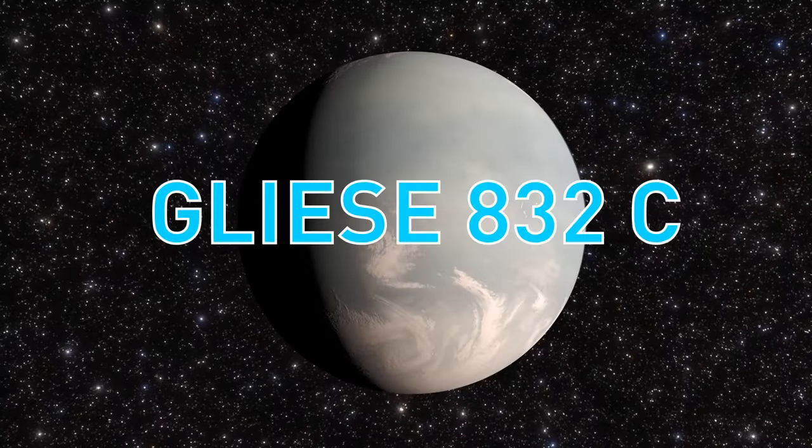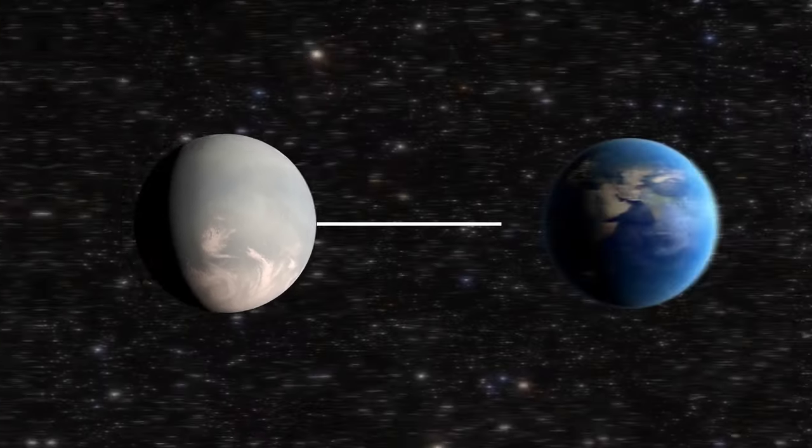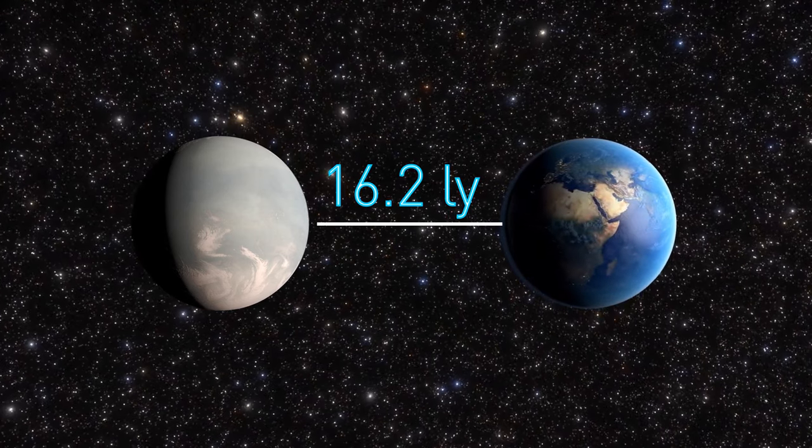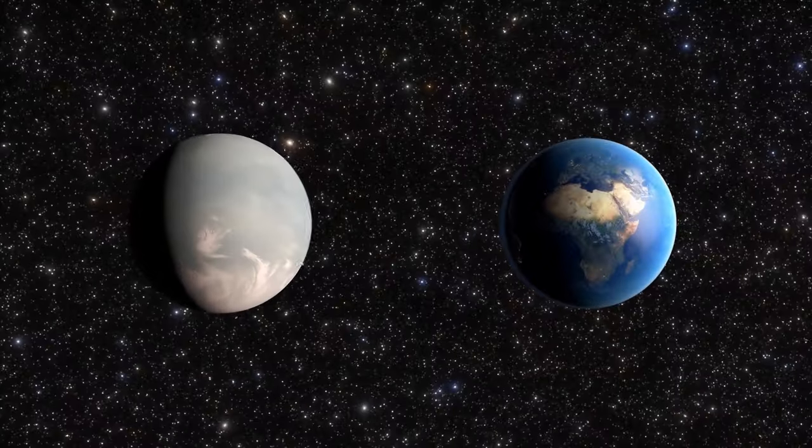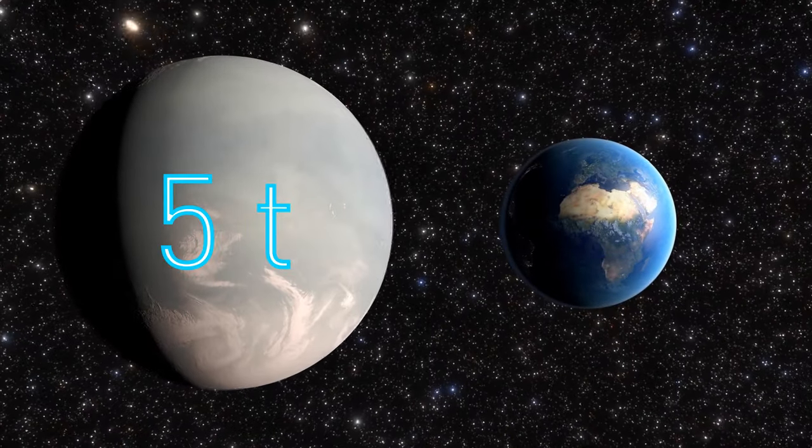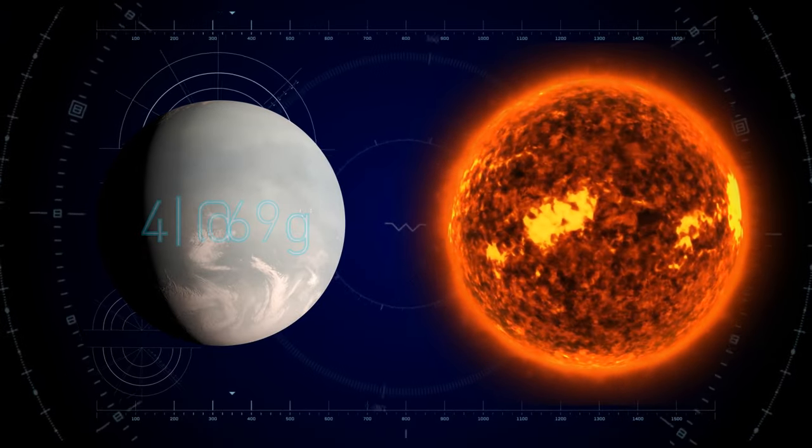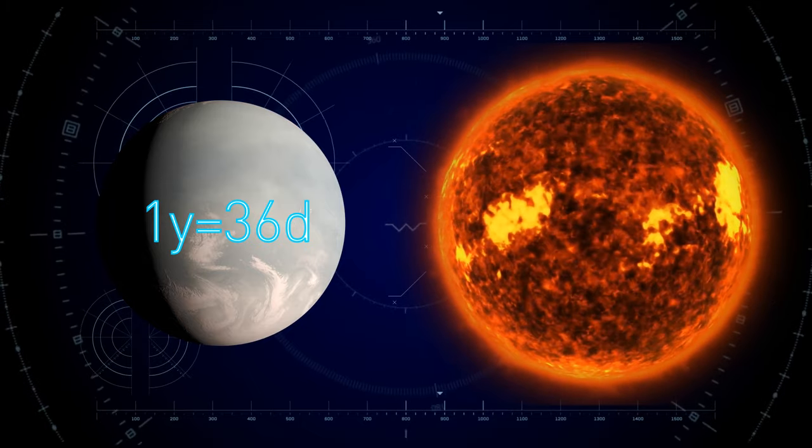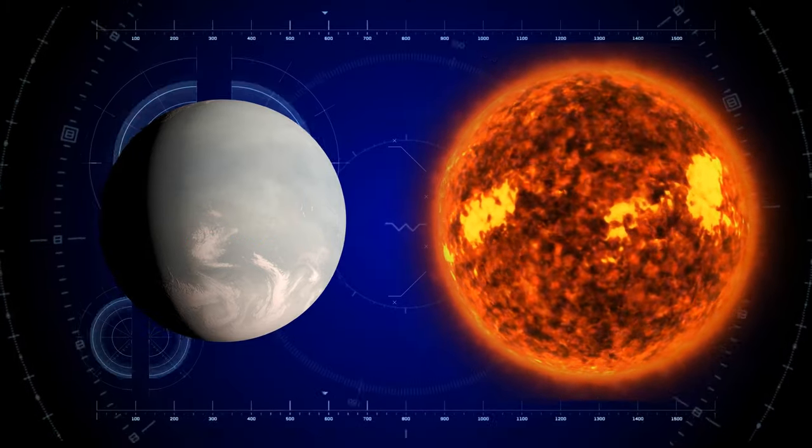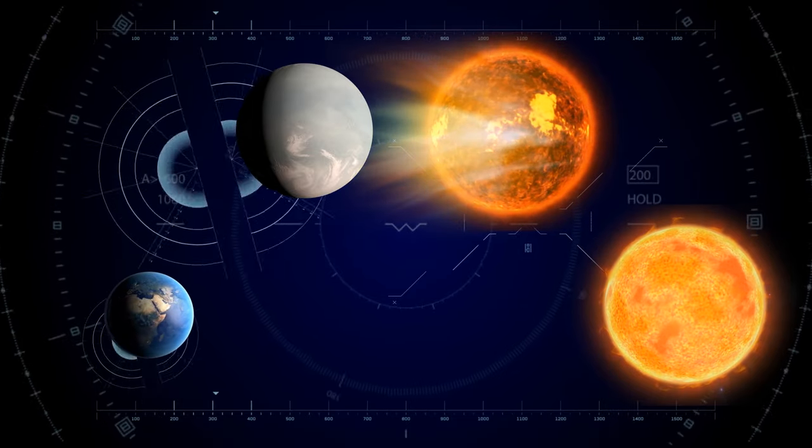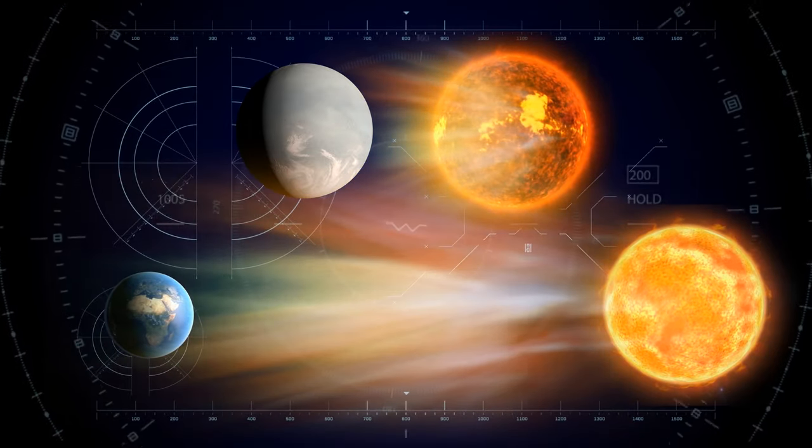Gliese 832 c is 16.2 light-years away from Earth. In the cosmic scheme of things, it's a stone's throw away. This exoplanet is five times as massive as Earth and travels much closer to its parent star. That's why a year on this planet lasts a mere 36 days. But since this star is a red dwarf, much cooler and dimmer than the Sun, Gliese 832 c gets as much light and heat as our planet.